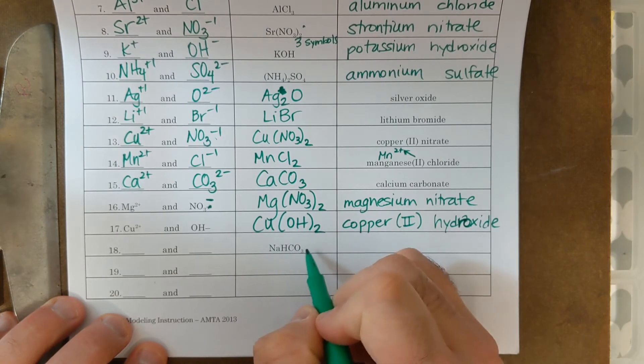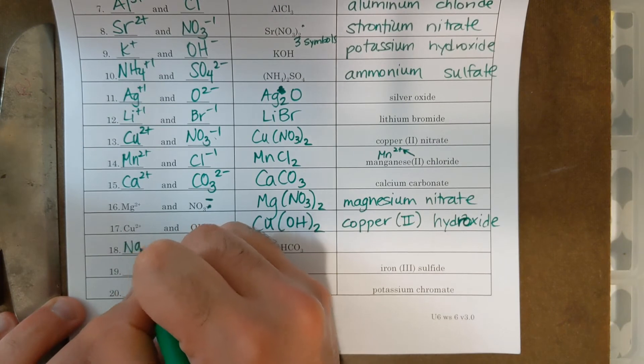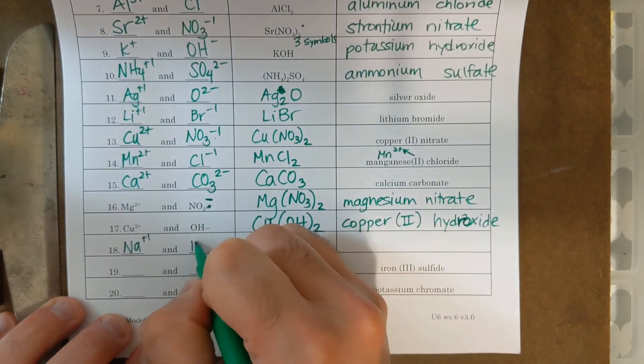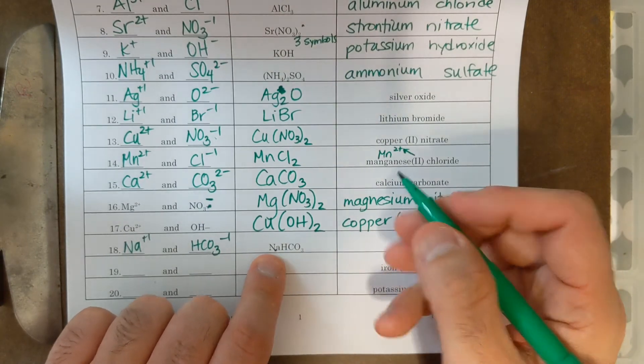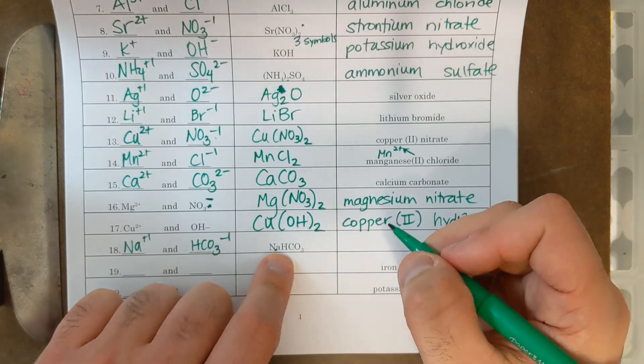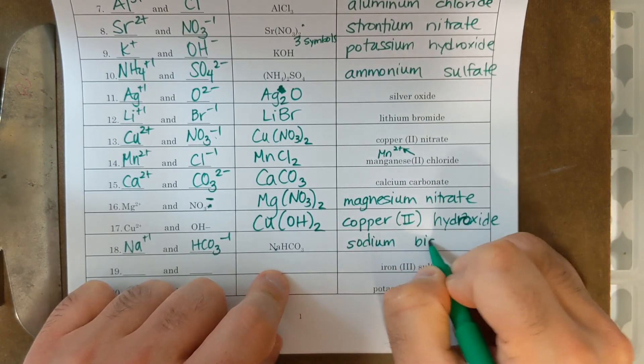Next one is NaHCO3. A lot of symbols here. Must have a polyatomic ion. Well, we already know that Na is plus one. HCO3 is another polyatomic ion. That's bicarbonate. If I want to name this, sodium Na is not a transition metal, so it's just sodium bicarbonate.